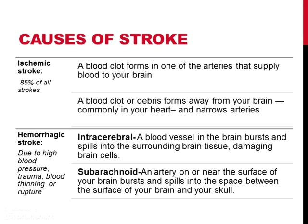What causes stroke? Well, there are two types of stroke. Ischemic stroke, which is 85% more common, and hemorrhagic stroke. The first one deals with blood clots which form in arteries, and the second one deals with blood vessels bursting. Please analyze this slide to see the details of when, where, and how these strokes occur. Both forms ultimately result in lower blood and oxygen supply to the brain and other organs.